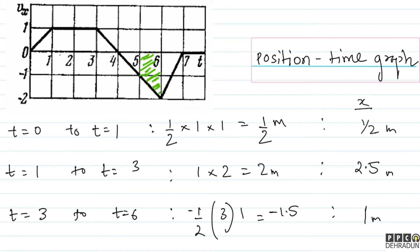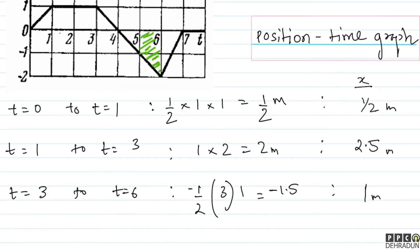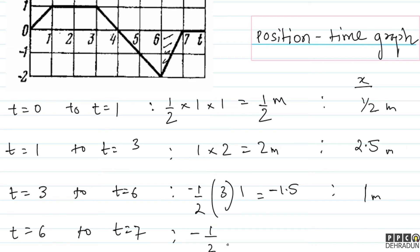T = 6 par position 1 hai. Ab t = 6 se t = 7 tak — is interval mein integration of v dt negative aayega: minus of half × base × height = minus of half × 1 × 2 = -1. Toh t = 6 par position thi 1, agle 1 second mein displacement -1 hua, toh t = 7 par woh wapas origin par aa gaya — x = 0.